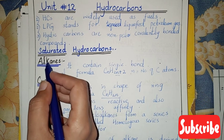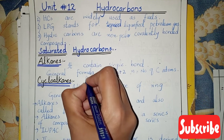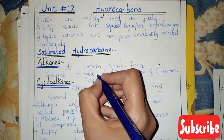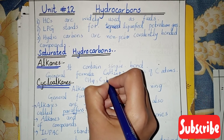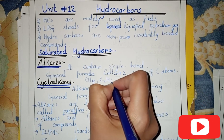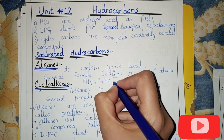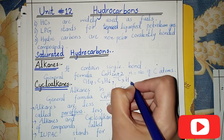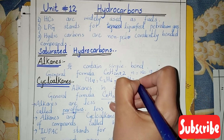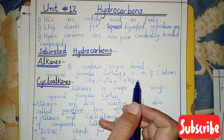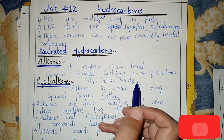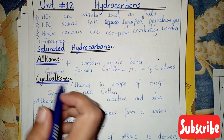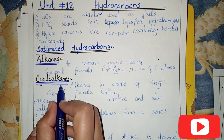Examples of alkanes are: CH4 methane, C2H6 ethane, C3H8 propane, C4H10 butane, and C5H12 pentane. Now, what are cycloalkanes?